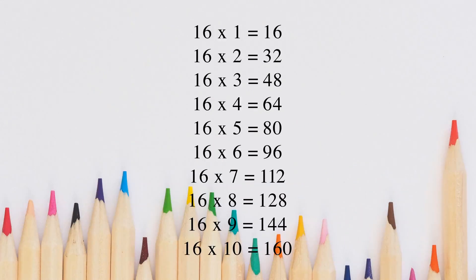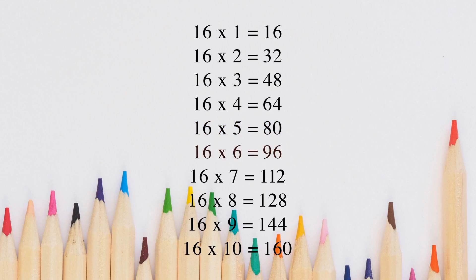Let's repeat. 16 1s are 16. 16 2s are 32. 16 3s are 48. 16 4s are 64. 16 5s are 80. 16 6s are 96. 16 7s are 112. 16 8s are 128. 16 9s are 144. 16 10s are 160.